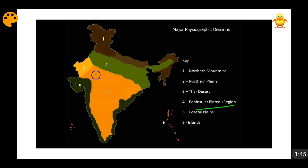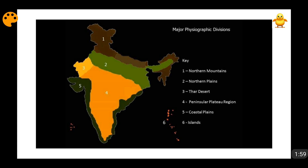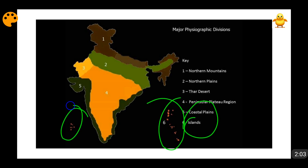The peninsular plateau is basically triangular in shape. Then comes the coastal plains, found on both the eastern and western edges. And then comes the islands. There are two major island groups in India: one is the Andaman and Nicobar island groups, and the second is the Lakshadweep island groups.